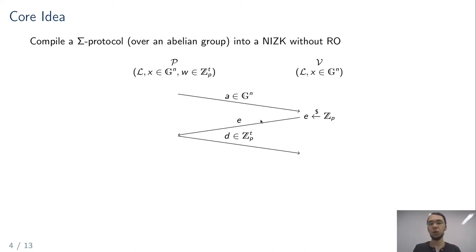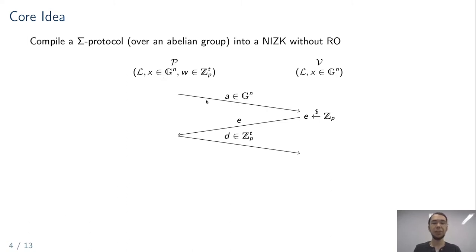We have to eliminate the one message from the verifier to the prover. The simplest way would be to include the challenge E in the common reference string so both parties can compute the proof non-interactively. However, this breaks soundness, because one property of a sigma protocol—special honest verifier zero-knowledge—says that if we know the challenge and the statement even for a word not in the language, there is a simulator producing an accepting transcript. So we can't simply give E to the prover in advance.